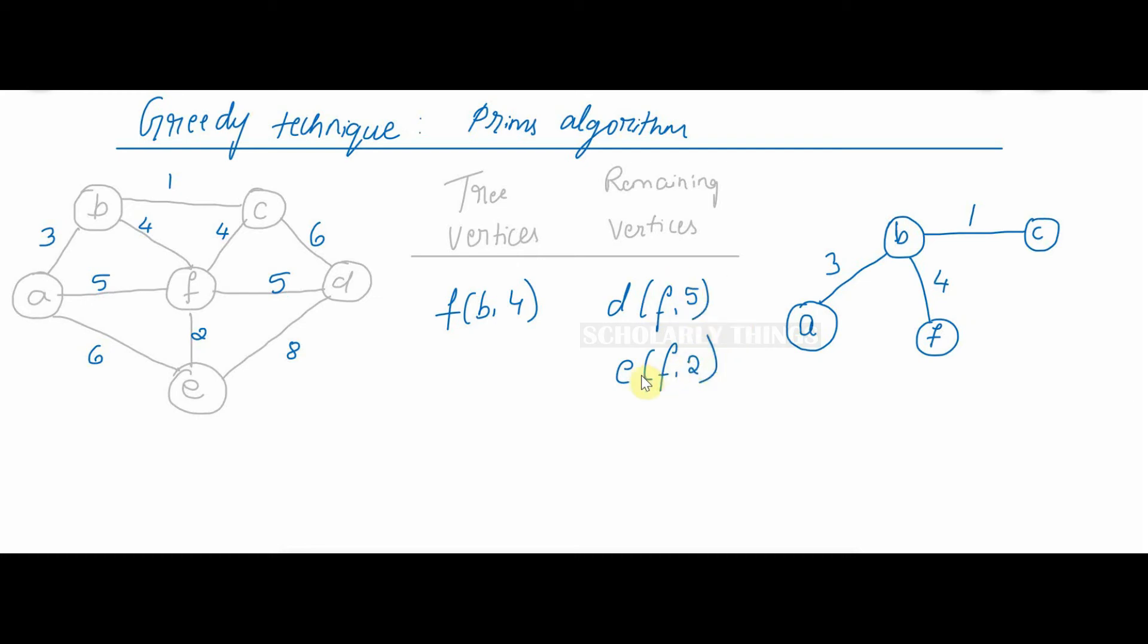Among these, E F, 2 is the smallest one. So go to E from F with weight 2. The tree vertex we are considering is E F, 2.